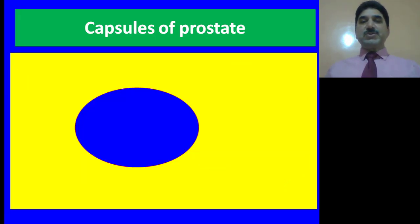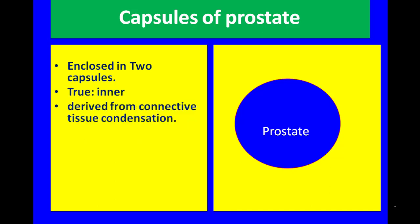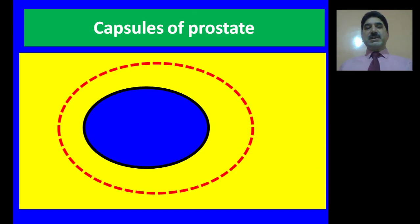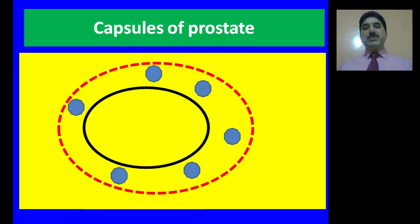To make things more clear, let us go to this animation. Like the thyroid gland, the prostate is also surrounded by two capsules. The true capsule, which is the inner capsule, surrounds the prostate and is derived from connective tissue condensation. The false capsule is the outer capsule of the gland derived from pelvic fascia, demarcated by the red dotted circle. Between the true and false capsule lie the prostatic venous plexuses. During surgery, an incision is given and the adenoma is shelled out, leaving behind the true capsule, false capsule, and the venous plexuses between the two. Thus, both capsules plus venous plexuses are left behind.